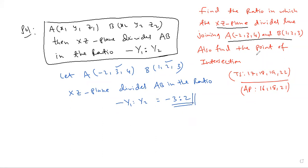What is the point of intersection? Use the section formula. Point of intersection Pi is equal to MX2 plus NX1 by M plus N, MY2 plus NY1 by M plus N, MZ2 plus NZ1 by M plus N.